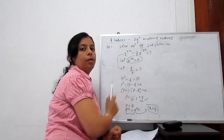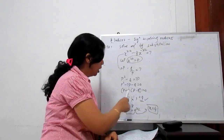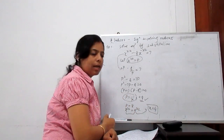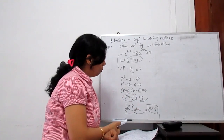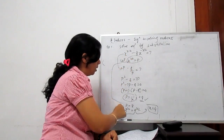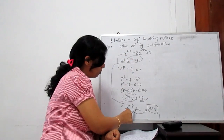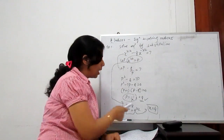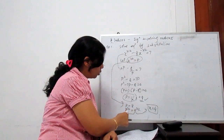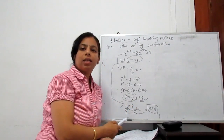Simplifying gives a quadratic equation. Finding the roots: the roots are minus 1 and 8. We reject the negative root and proceed with the positive root p equals 8. Substituting back: p is x to the power 3 by 2, so x to the power 3 by 2 equals 8. Rewriting 8 as 4 to the power 3 by 2, since the powers are the same we compare the bases, giving x equals 4.